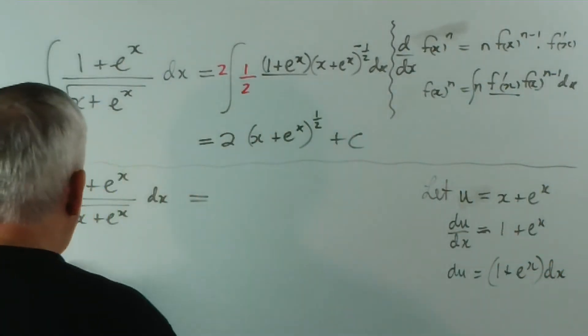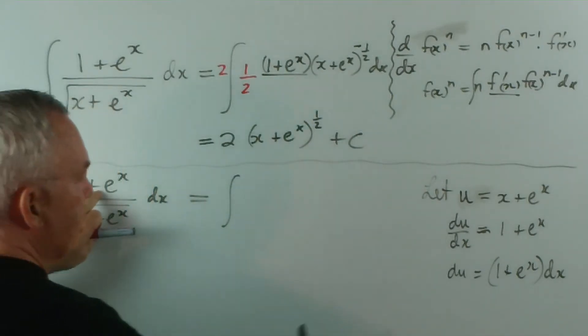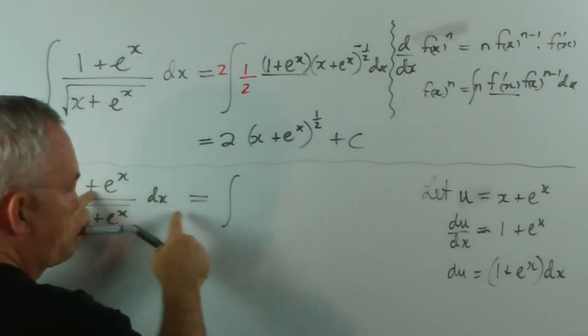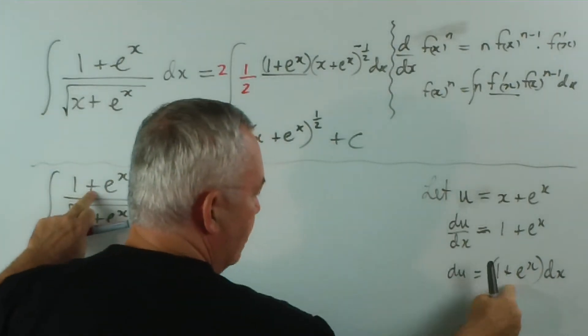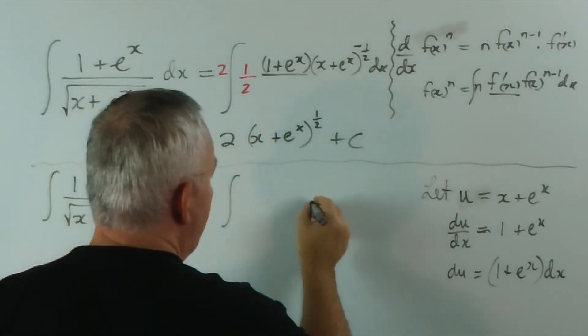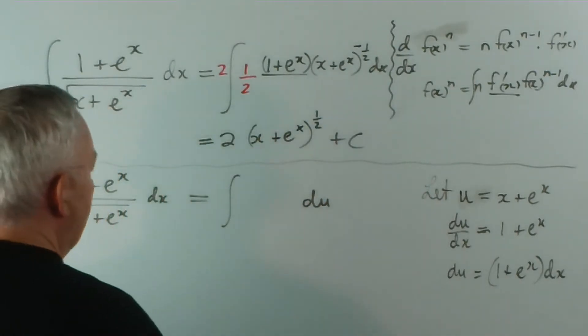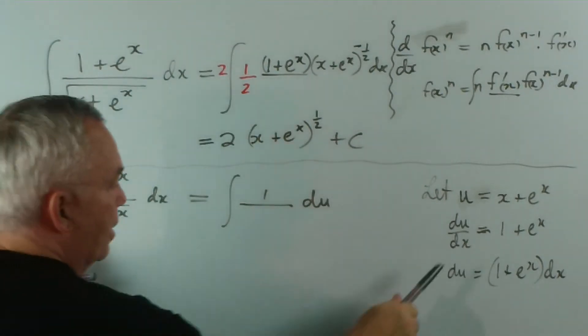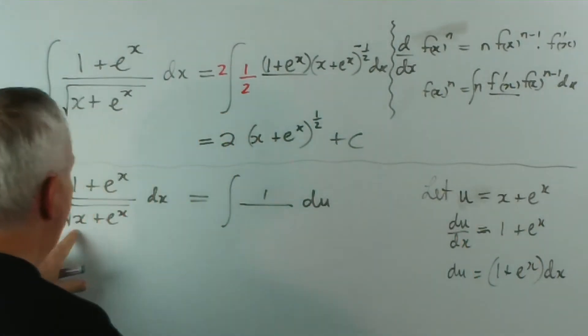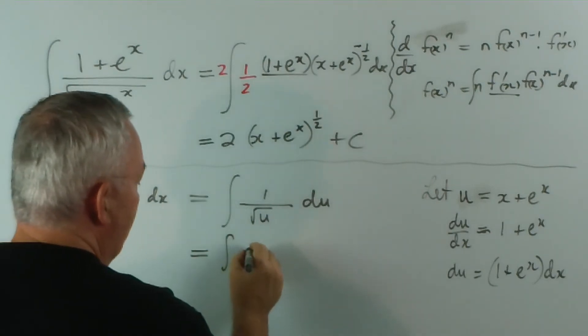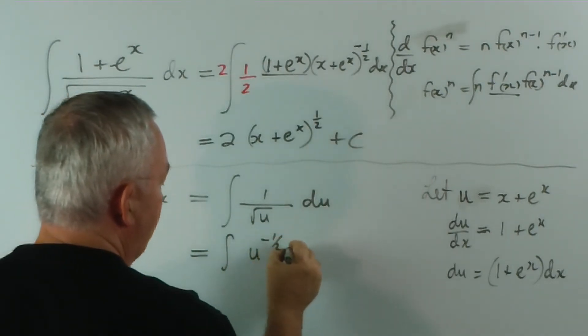Using that information, we get the following: 1 plus e to the x times dx, that times that is this times this, that's exactly what we have. So all of that top part gets replaced with a du, and this bottom part, the x plus e to the x is worth u, so we get the square root of u. This is a much simpler looking integral.